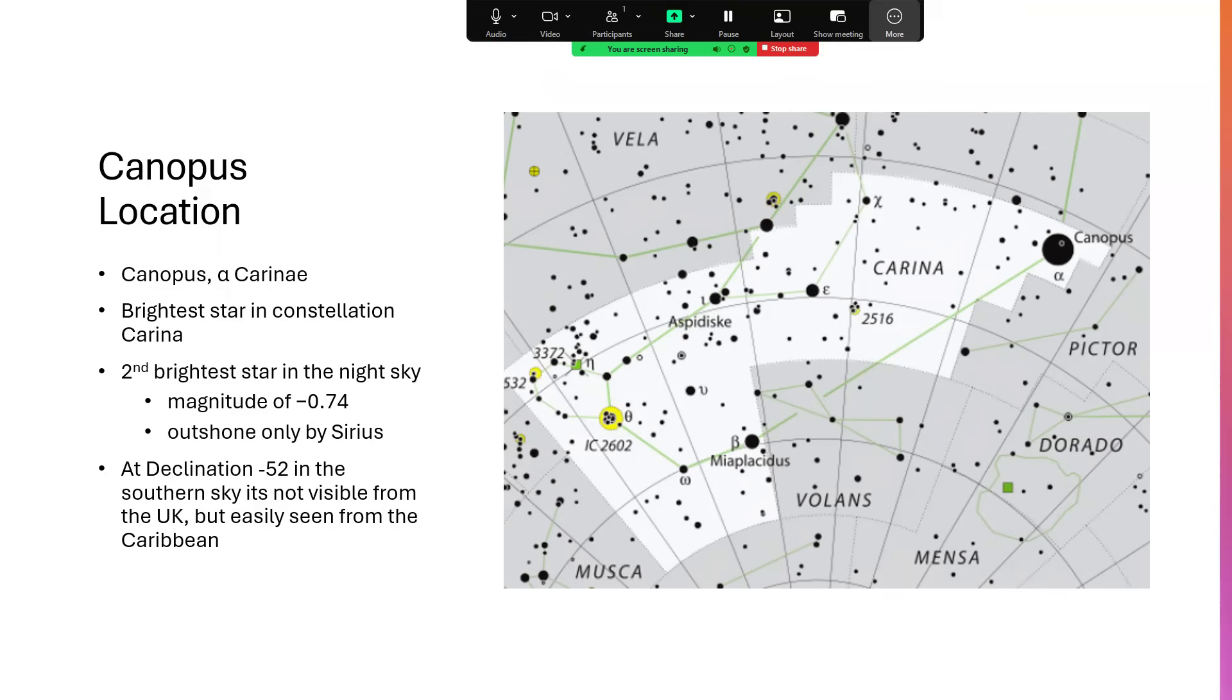It's the brightest star in the constellation of Carina in the southern hemisphere and therefore gets the designation Alpha Carinae. Magnitude minus 0.74, so very bright indeed.